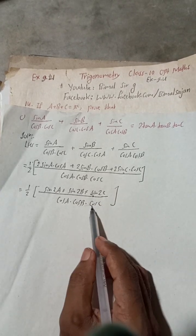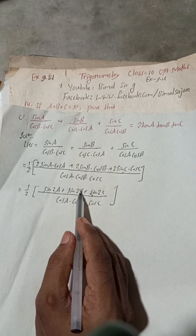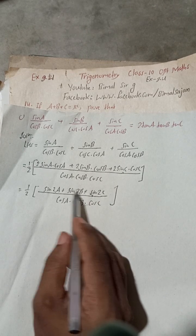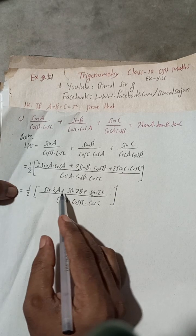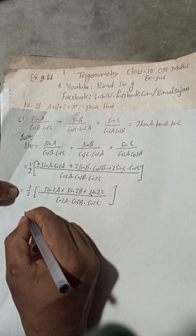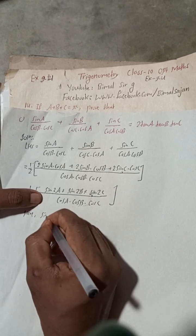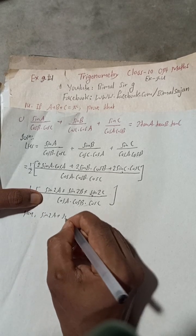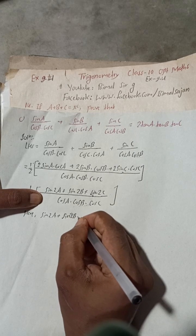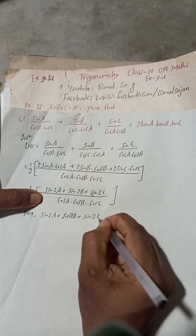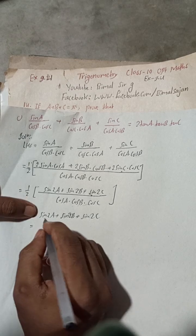We don't want to work with the full fraction because it takes a long time to simplify. So we will take the numerator part only — sin 2A plus sin 2B plus sin 2C — and solve this part separately.